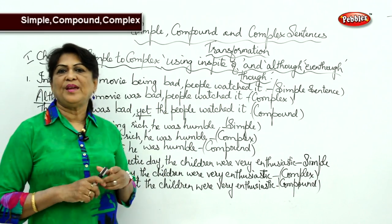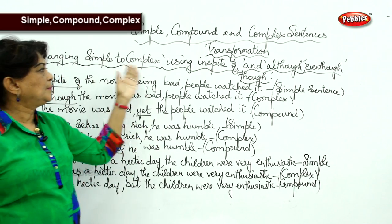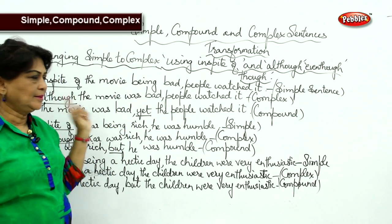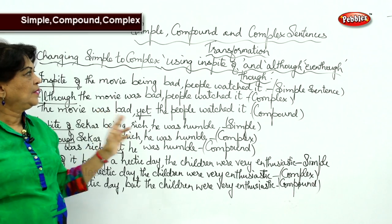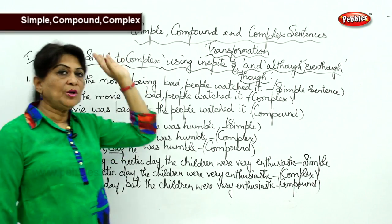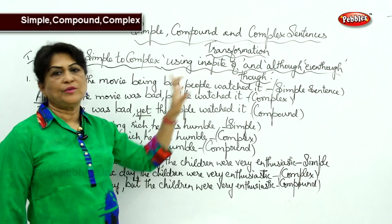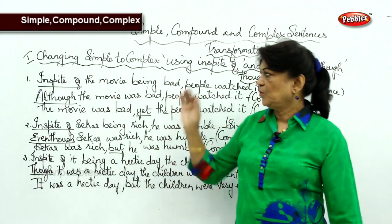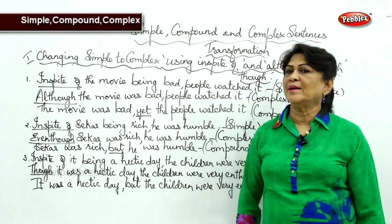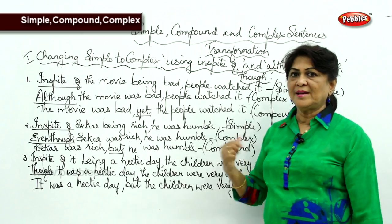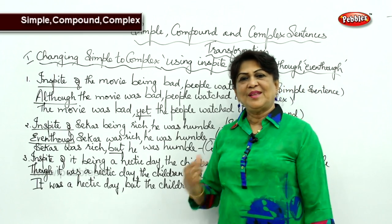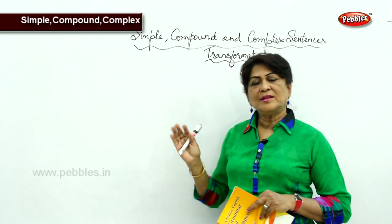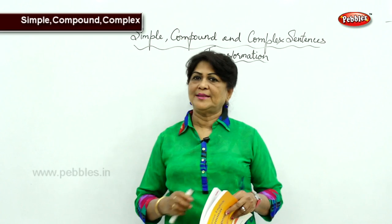I have taught you two different ways of changing or transforming simple into complex, and complex into compound. Two different methods: when T-O-O is used, how to do it; and when 'in spite of' is used, what to do. If you keep revising this, you will score full marks — not only in your test but also in my test which I am going to give you by the end of this chapter. Next, I am going to teach you how to transform compound to complex sentences, using 'unless' and 'or.'